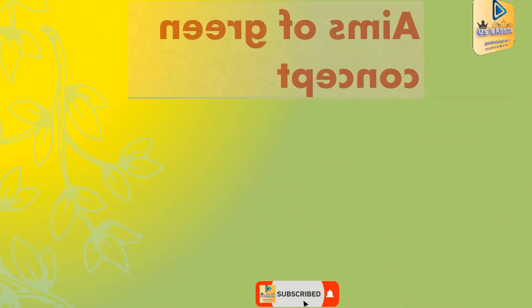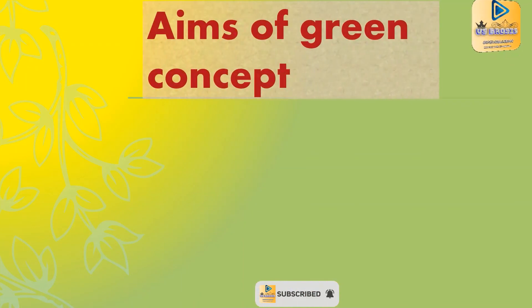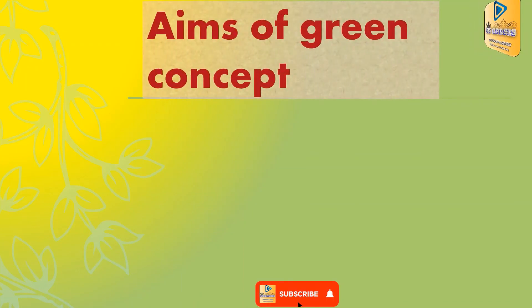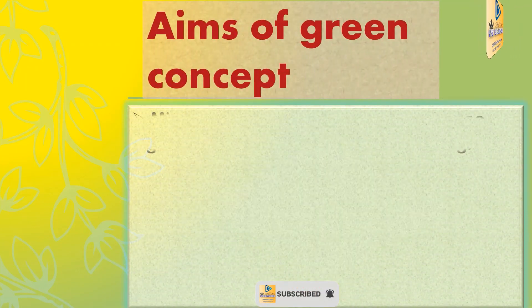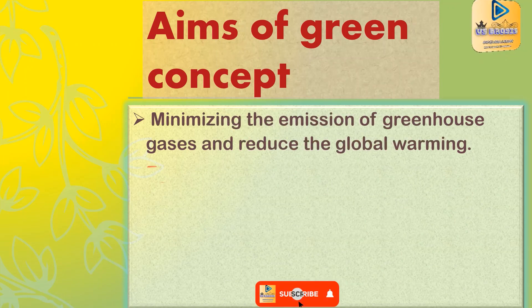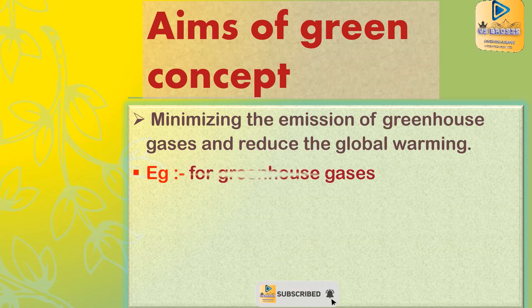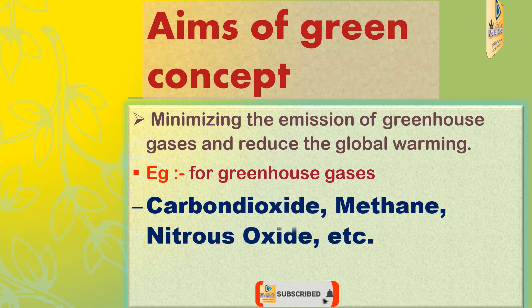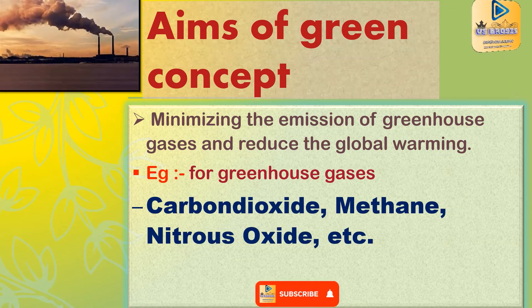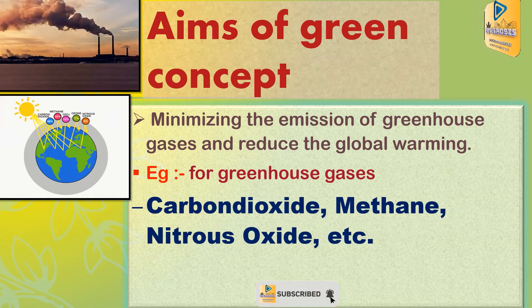The aim of the Green Concept is to minimize the emission of greenhouse gases. Examples of greenhouse gases are carbon dioxide, methane, nitrous oxide, etc.